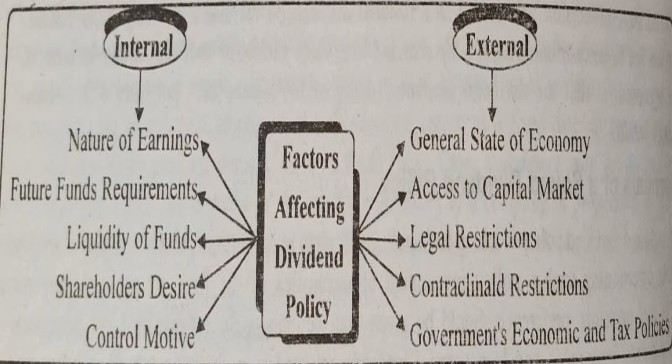Next is liquidity of funds. A company's capacity to pay dividends will be determined primarily by its ability to generate adequate stable profits. Dividend represents cash outflow. The greater the funds and the liquidity of the firm, the better is the ability to pay dividends. If a company's funds are sufficient and liquidity position is good, they can easily pay dividend to their shareholders. So liquidity of funds should be there in the company.